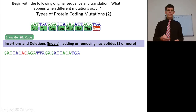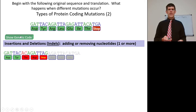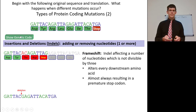Indels are especially problematic because we read DNA with a triplet code. If we add or remove nucleotides, we can shift the reading frame. For example, inserting AC into the sequence changes the reading from GAT, TAC, AGA to GAT, TAC, ACA — and everything downstream is shifted, often resulting in a premature stop codon. This is a frameshift mutation: an indel affecting a number of nucleotides not divisible by three, altering every downstream amino acid.